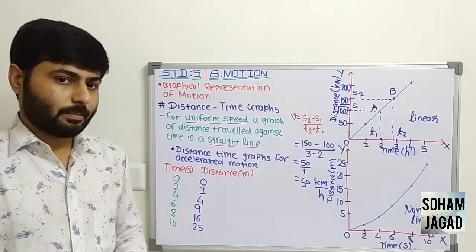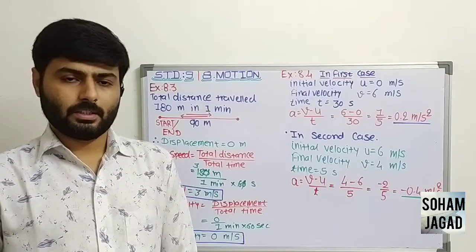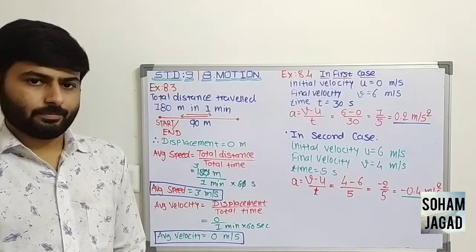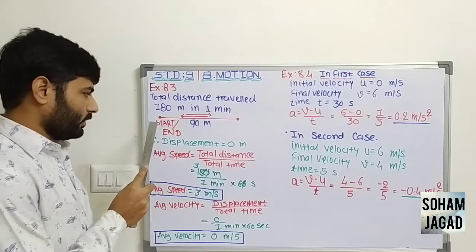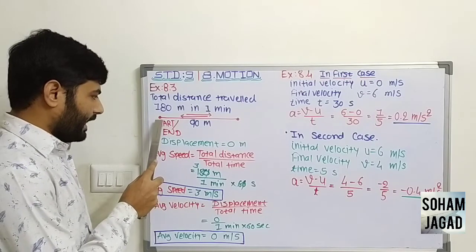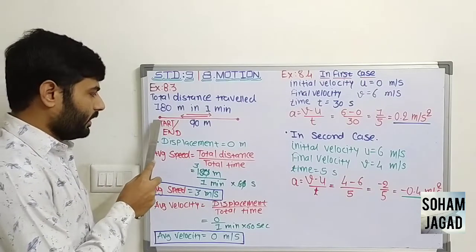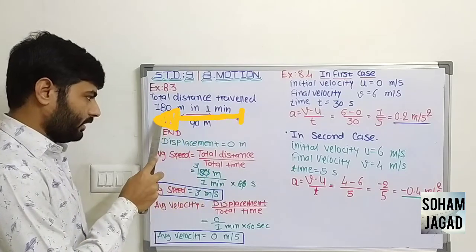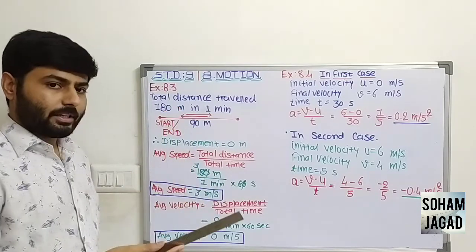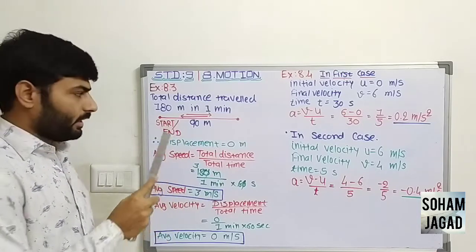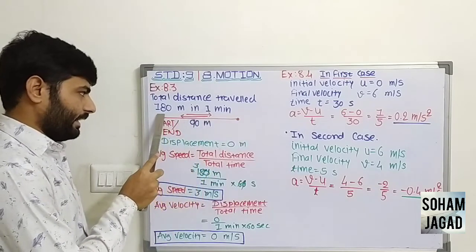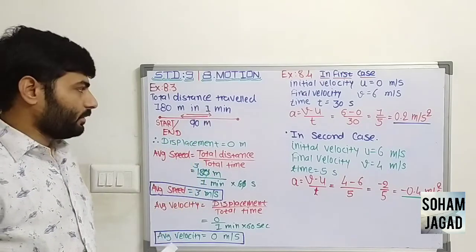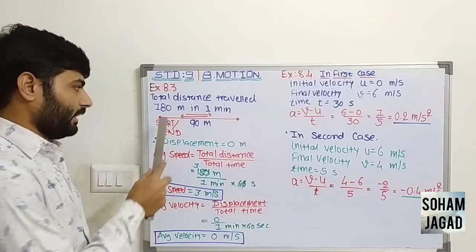So, the graph for accelerated motion is non-linear, and the graph for uniform speed is linear. Now let us take a few examples. In example 8.3, Usa swims in a swimming pool. She starts from point O, goes to the other end of the pool, and comes back on the same path to the starting point. The swimming pool is 90 meters long, so she covers a total distance of 90 plus 90, that is 180 meters, and she takes 1 minute.